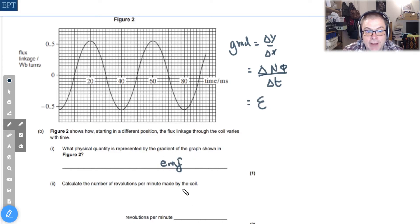Next we have to calculate the number of revolutions per minute made by the coil. Well that's just a question of looking for the time period. The time period in this case is going to be 40 milliseconds.